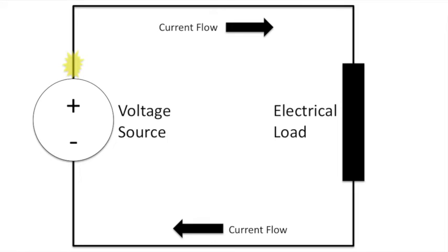From this diagram, we can see a representation of a circuit flow. We can see that the current flows from the positive terminal of the voltage source through the load on the circuit back to the negative source.